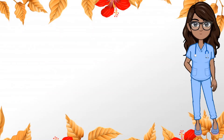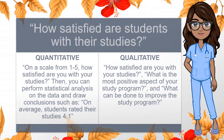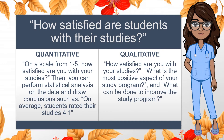Here is a simple example on how you can apply the two methods differently on the same research question: How satisfied are students with their studies? In quantitative research, you may survey 250 students at your school and ask them: On a scale from 1 to 5, how satisfied are you with your studies? Then you can perform a statistical analysis and draw conclusions such as: on average, students rated their studies 4.1.